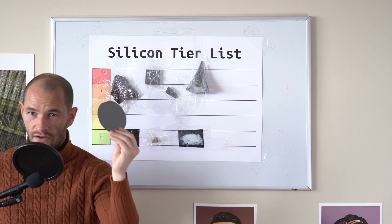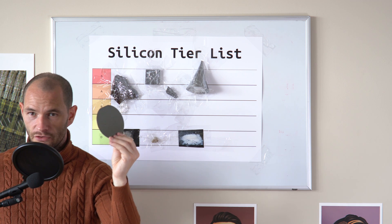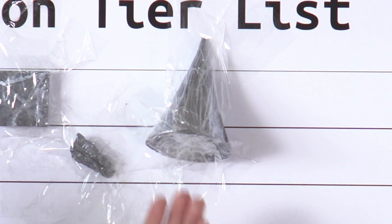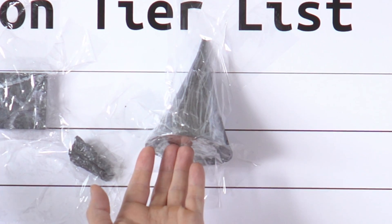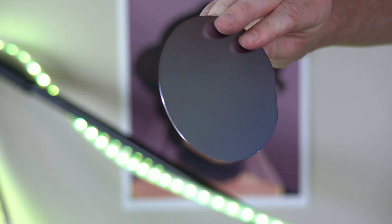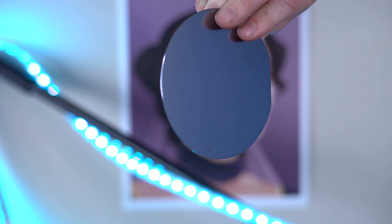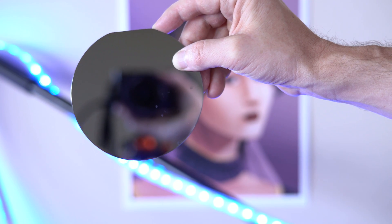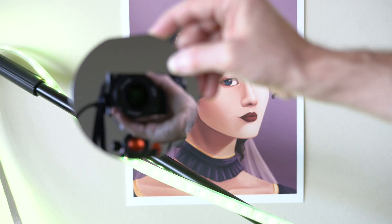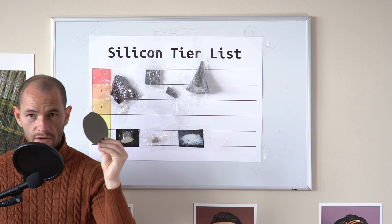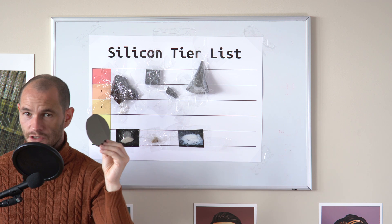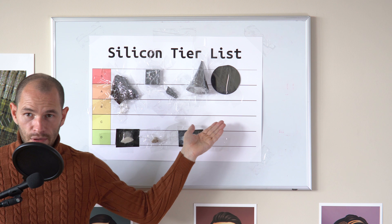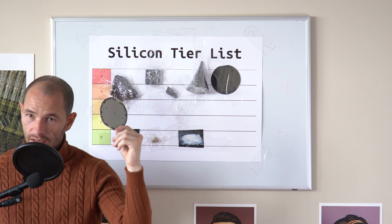Next, we have a blank unused silicon wafer with nothing on it. Silicon wafers like this one are cut from silicon monocrystals. On one side of the wafer is a dull, slightly reflective surface, and on the other side is a smooth, mirror-like finish. This is one of the smoothest surfaces that humans can produce. For this reason, I'll put blank silicon wafers in the S tier.